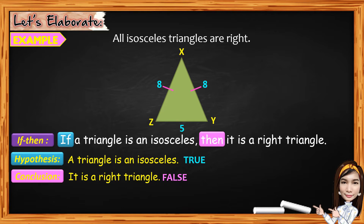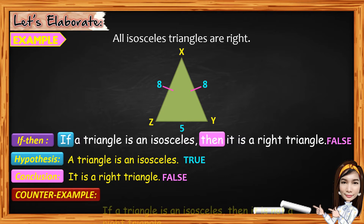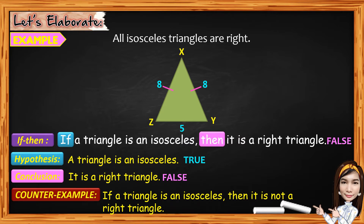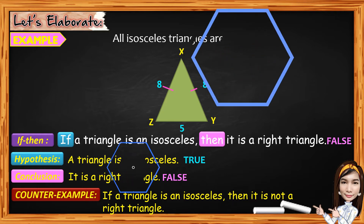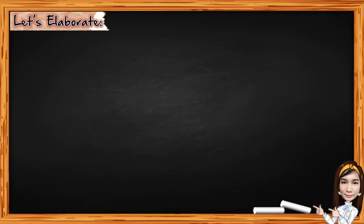Because there is no right angle — all the angles there are considered acute angles. So therefore, the if-then or conditional statement, if a triangle is an isosceles, then it is a right triangle, is considered false. Now, to make it true, we can have the counterexample, which is: if a triangle is an isosceles, then it is not a right triangle. Now let's have another statement, which is the converse.